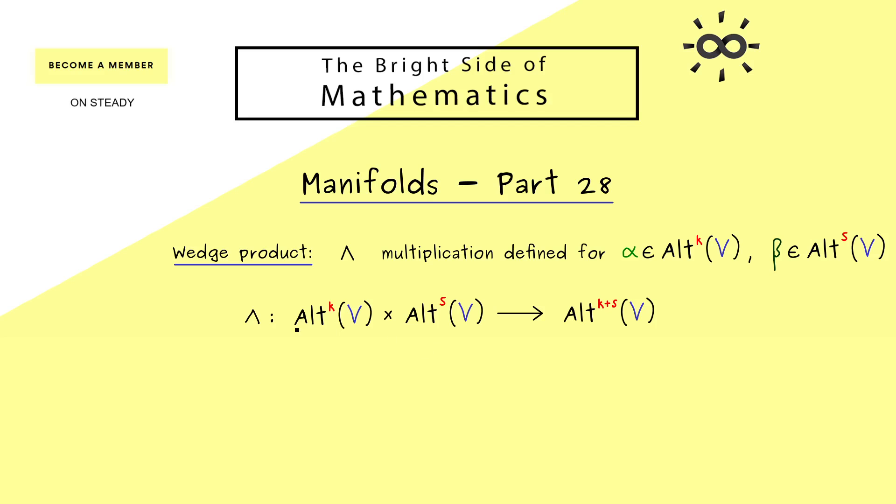For example, if we have a one-dimensional integration and another one-dimensional integration, we want to combine them to a two-dimensional integration. However, the explicit details for that will follow in future videos. At the moment we can just say that we want such a multiplication in order to deal with these alternating k-forms.